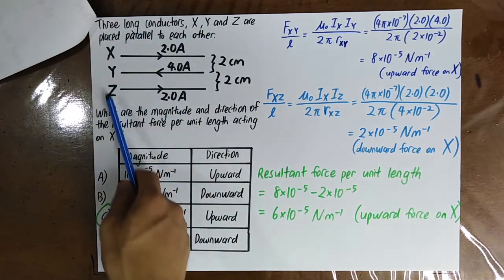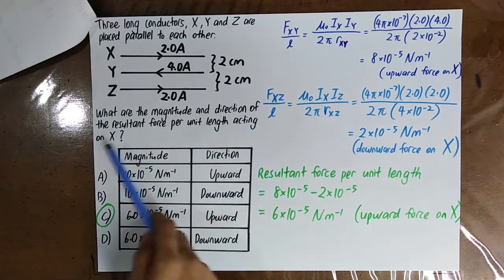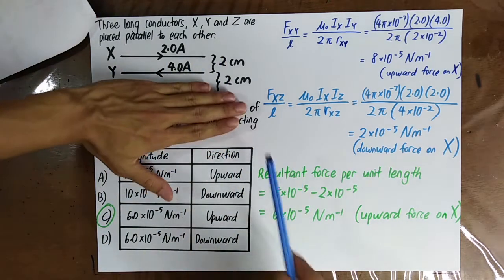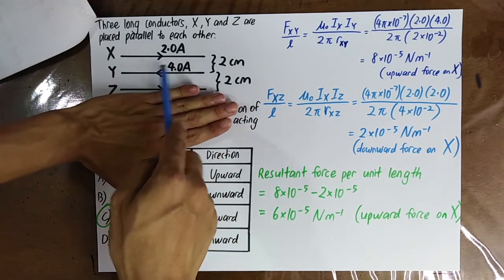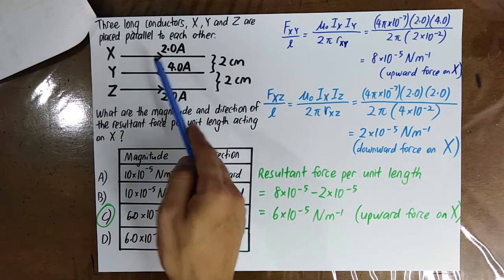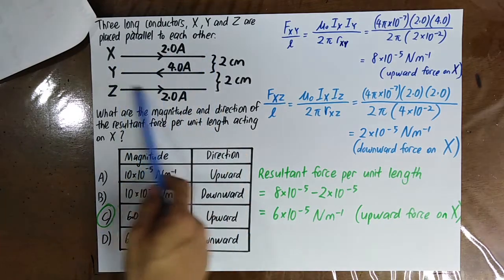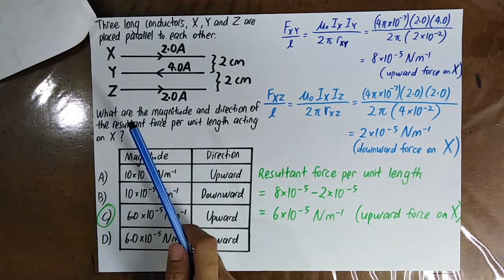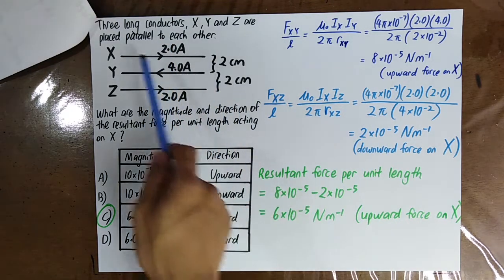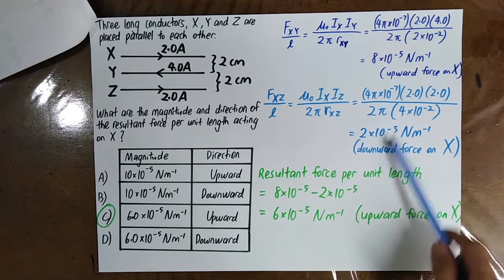Three long conductors X, Y, Z are placed parallel — find the magnitude and direction of the resultant force per unit length on X. For X and Y: currents are in opposite directions, so they repel — force on X by Y is upward. For X and Z: currents are in the same direction, so they attract — force on X by Z is downward. Since the two forces act in opposite directions, you subtract them to find the net resultant.